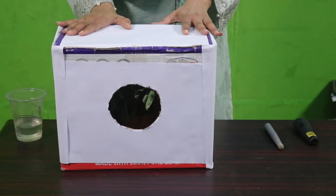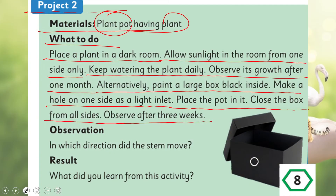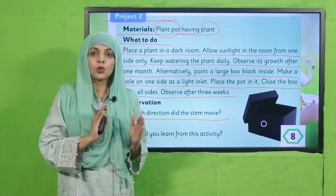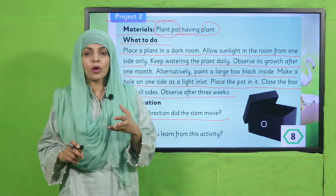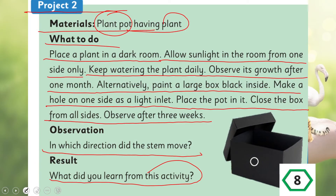What we will observe: in which direction did the stem move? After three weeks, check which side the leaves and stem have moved toward. They will definitely move towards where the sunlight is entering. That is the result — from this activity we learn that plants respond to sunlight, and you will record this observation after three weeks.